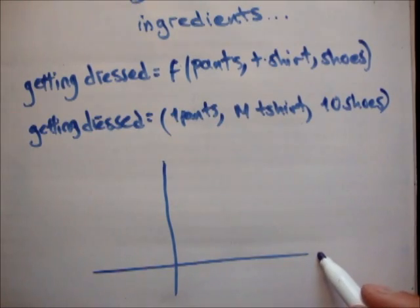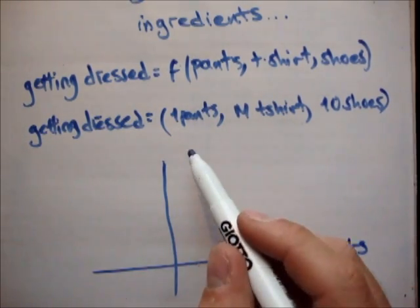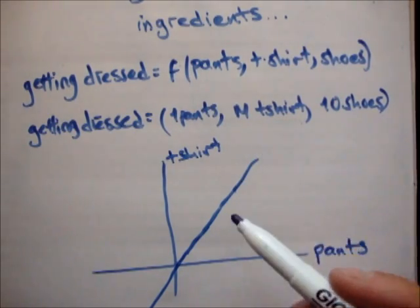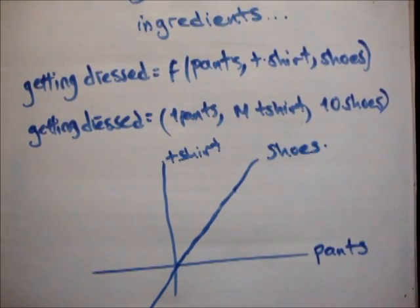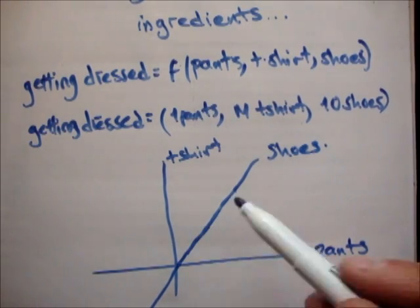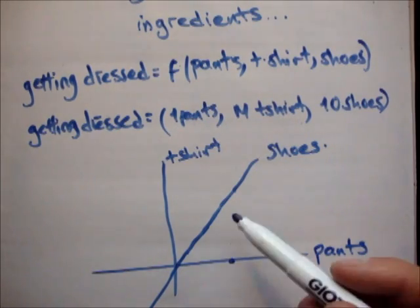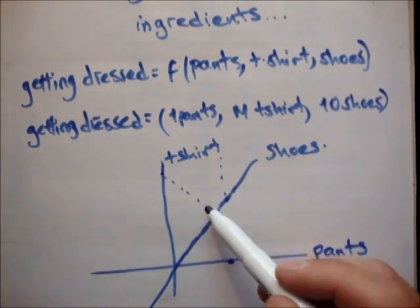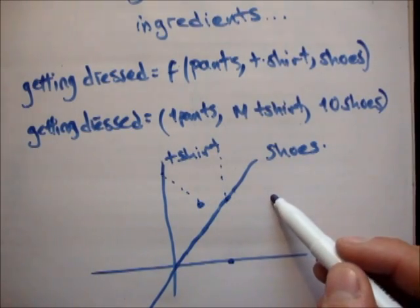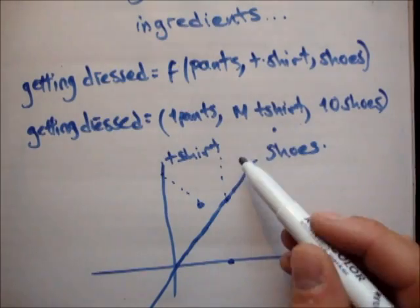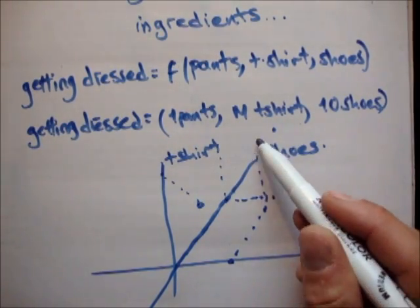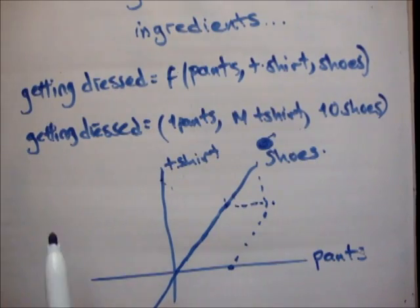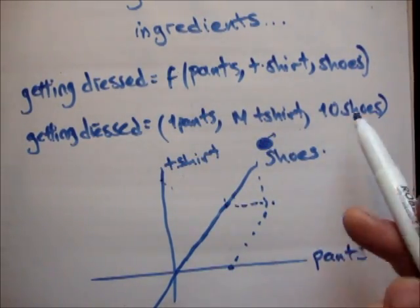So how would you graph that? We'd say this axis might be pants, this might be t-shirt, and we'll have to draw another axis because we have three dimensions, and we might call this shoes. One pair of pants might be here, a medium t-shirt might be here, and size 10 shoes might be up here. Drawing in 3D is something I'm not good at, but you might have this point up here in 3D space — the point for getting dressed where you have one pair of pants, a medium t-shirt, and size 10 shoes.